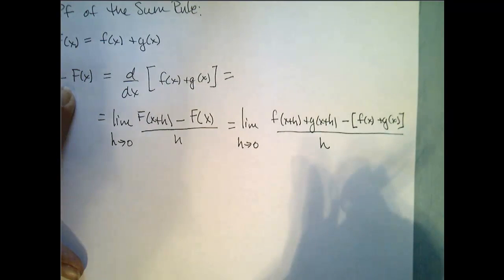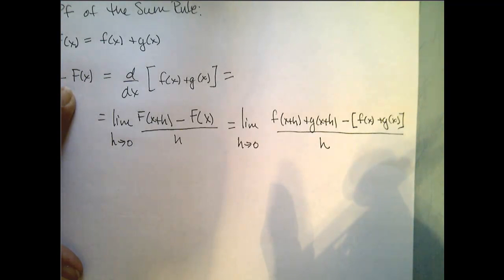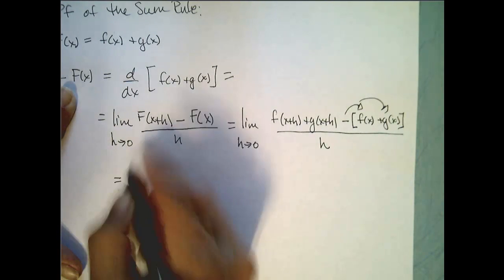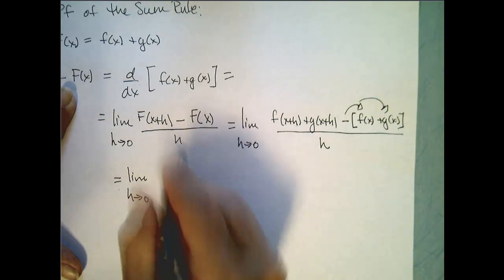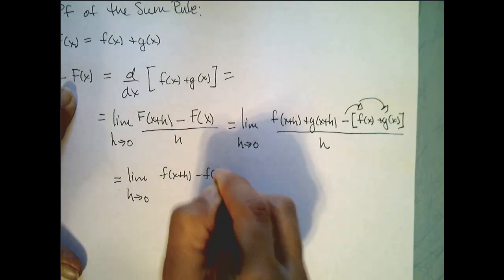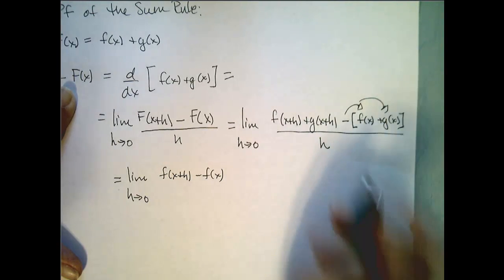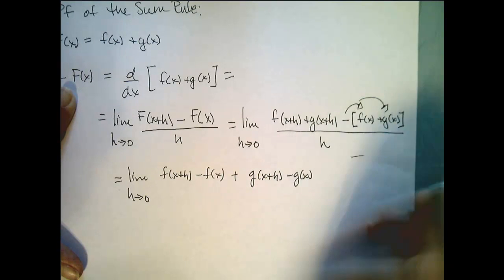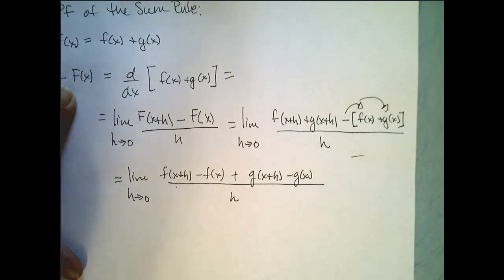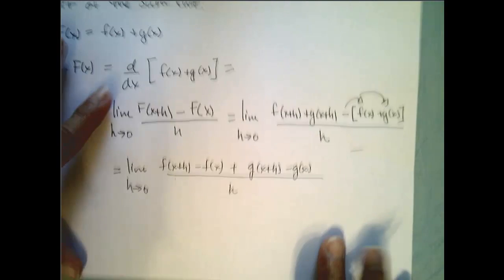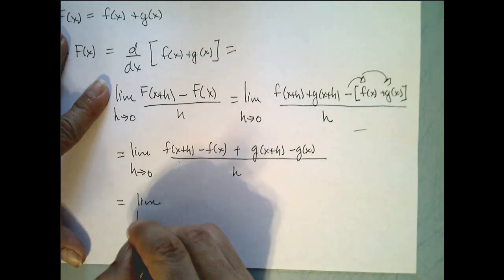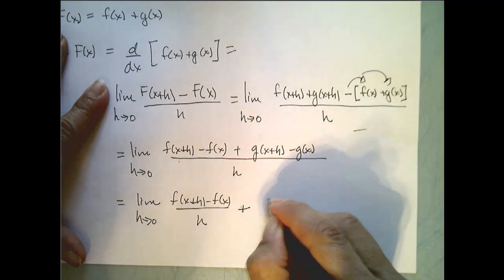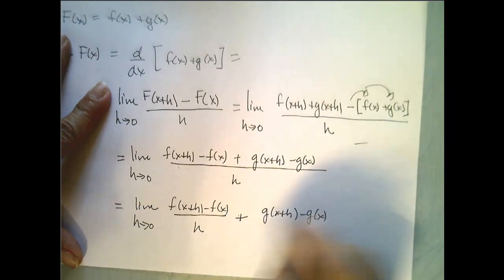Let's work with this and see if we can manipulate it to discover the result we want. I'm going to distribute that negative and then group my f terms and my g terms. So this is equal to the limit as h goes to 0 of f of x plus h minus f of x — distributing the negative and grouping the f's — plus g of x plus h minus g of x, all over h. Now if I split this fraction into two, I get the limit as h goes to 0 of f of x plus h minus f of x all over h, plus g of x plus h minus g of x all over h.